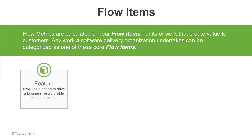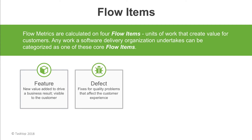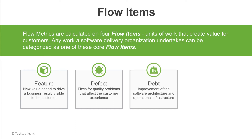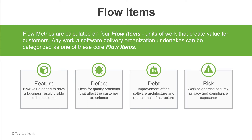First you have your features — those are new behaviors, use cases, or functionality that drive a business result and they are visible to your customers. Next you have your defects — those are fixes for quality problems that affect the customer experience. The third category is debt — those are the improvements to the software architecture or operational infrastructure. And lastly you have risk, which encapsulates all the work you do to address security, privacy, and compliance exposures.